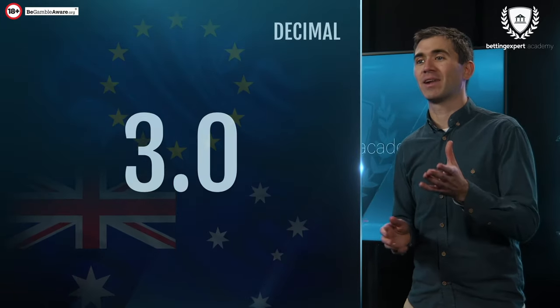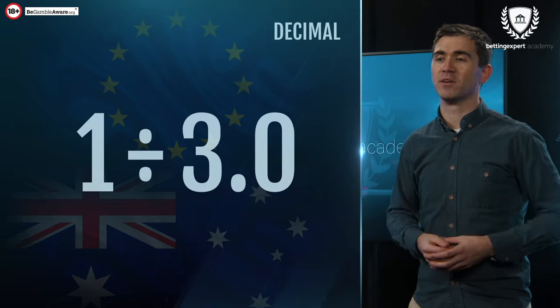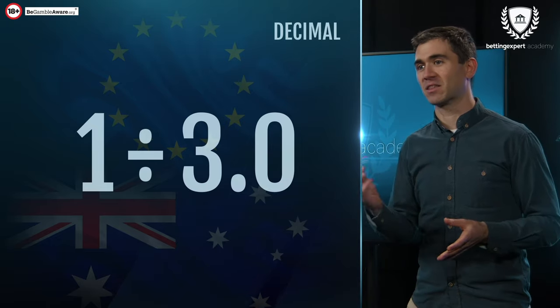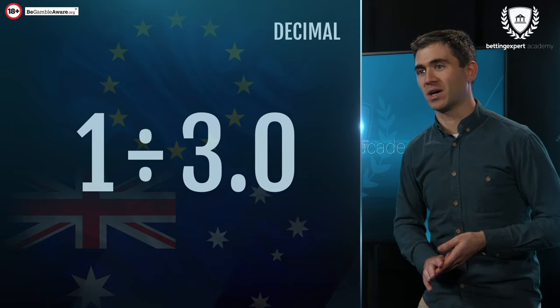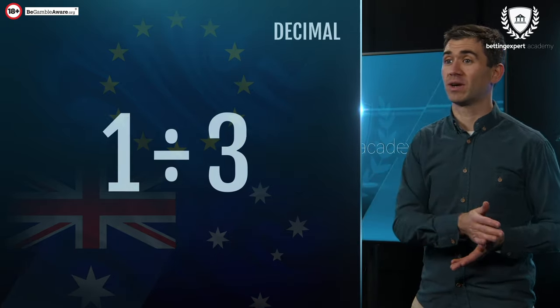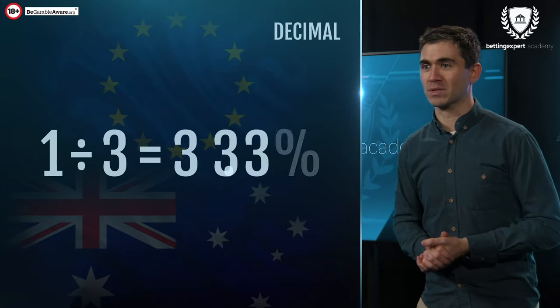For decimal odds, the calculation is one divided by those decimal odds. So if we take the 3.0 example, we get one divided by three, giving 33.3%.